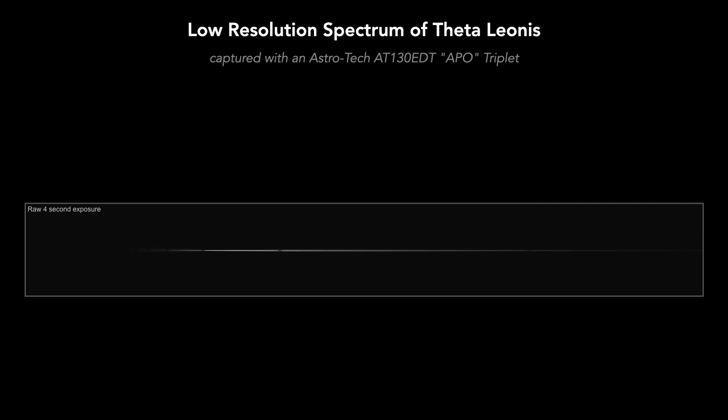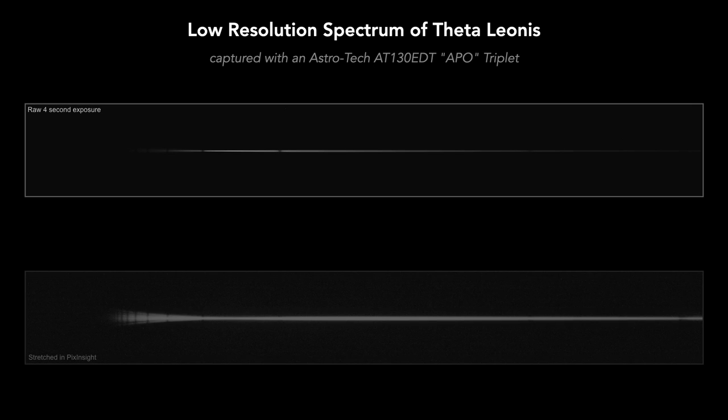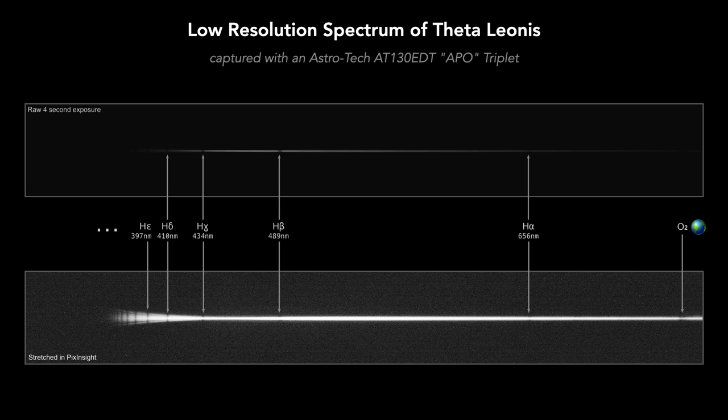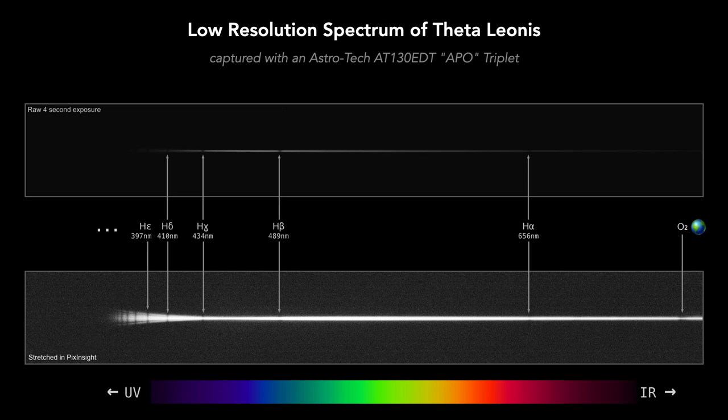Here is what an uncalibrated low-resolution 2D spectrum of a hot star, in this case Theta Leonis, looks like through my own triplet aporefractor across the entire visible spectrum. To better see what's going on, I stretched the image in PixInsight. We can easily identify and use the absorption lines from the Balmer series to figure out what wavelengths we're looking at. The most notable feature on this 2D spectrum is the classical fishtail effect on the left, in the deep blue part of the spectrum, in the near UV, which is the telltale sign of longitudinal chromatic aberration.